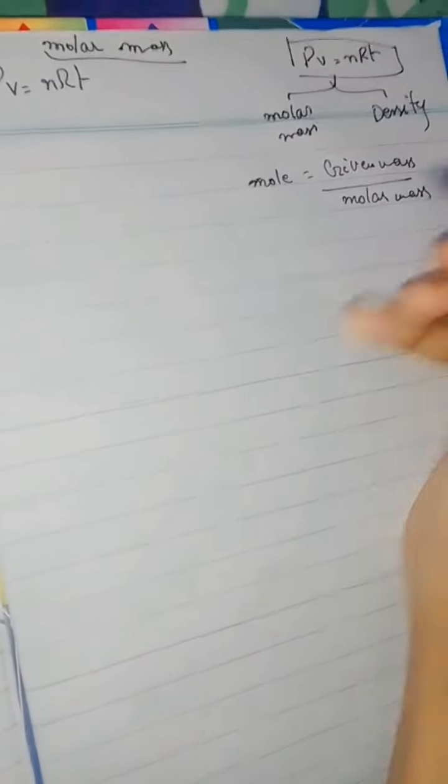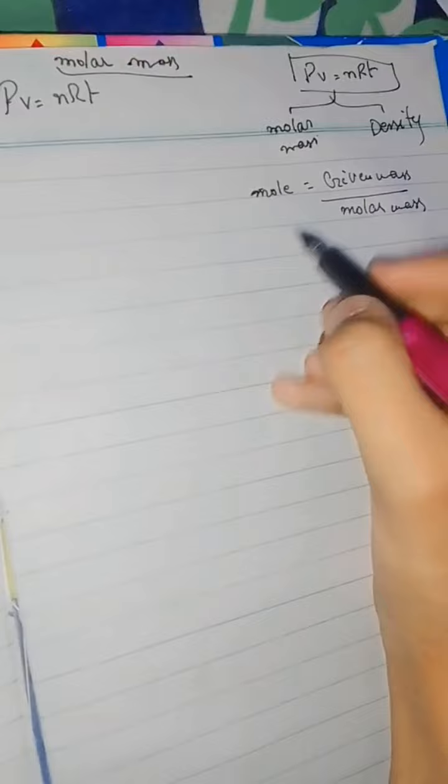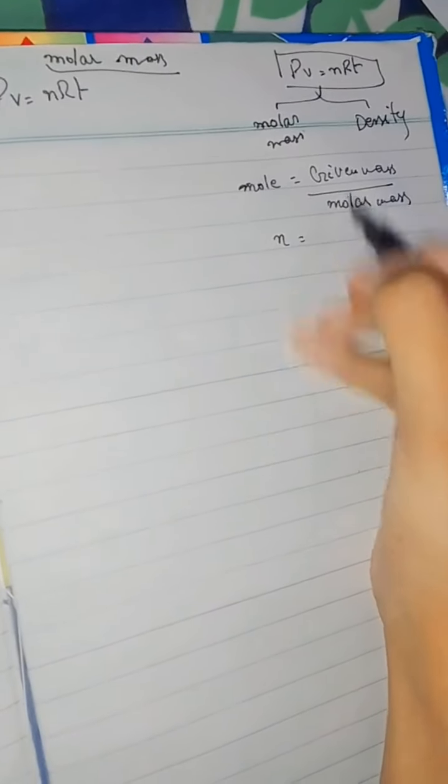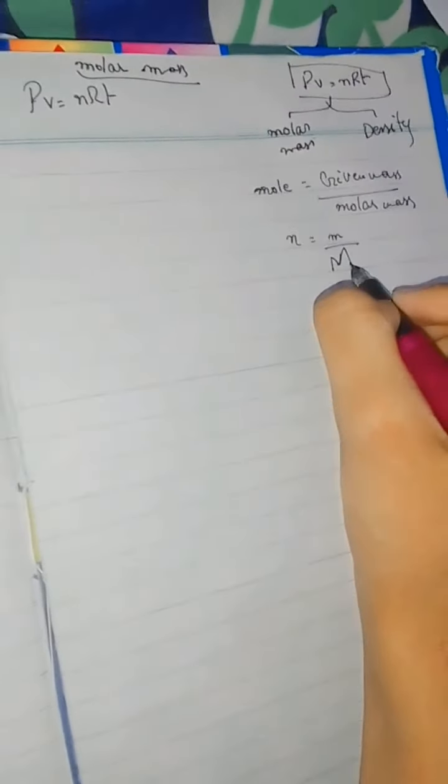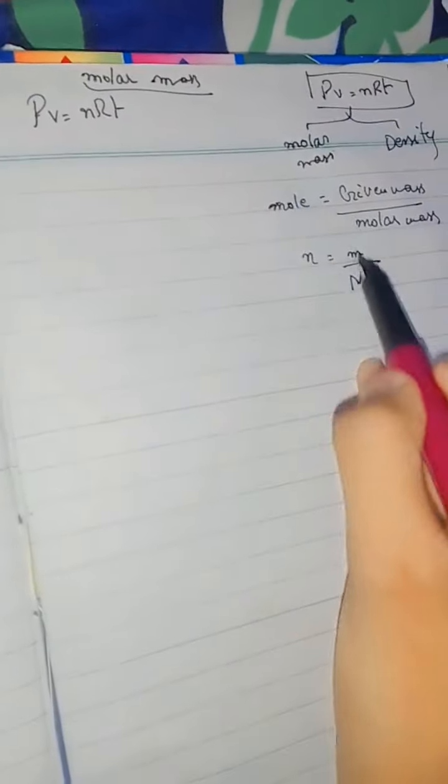Now we are going to derive the formula for molar mass using the ideal equation. In PV = nRT, the mole n is equal to given mass (m) divided by molar mass (M). So n is denoted by small m upon capital M. Instead of n, we can write the value m upon M.